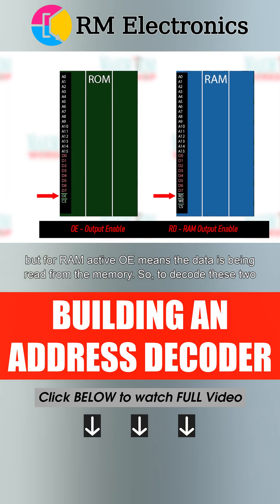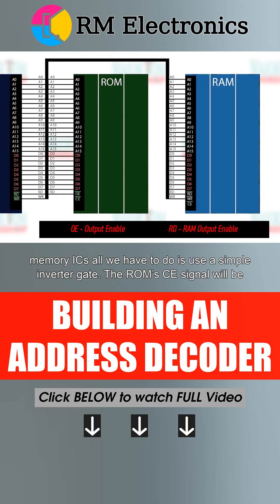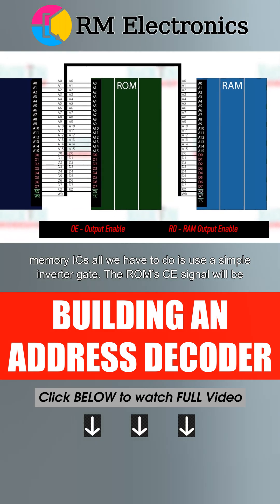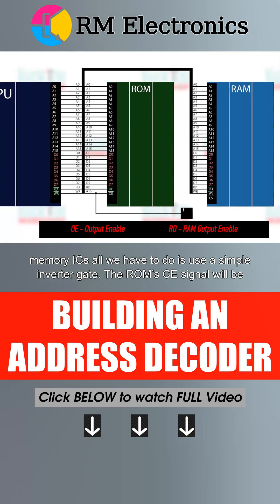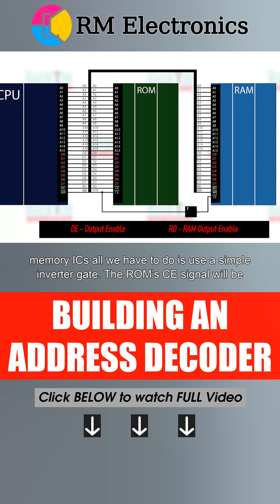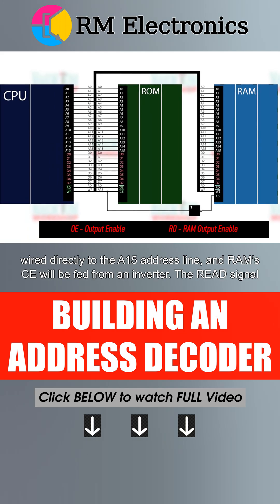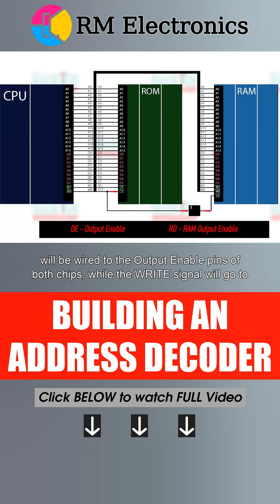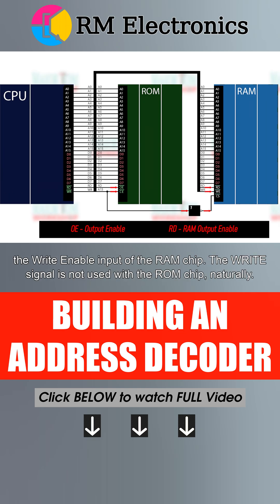To decode these two memory ICs, all we have to do is use a simple inverter gate. The ROM CE signal will be wired directly to the A15 address line, and RAM CE will be fed from the inverter. The read signal will be wired to the Output Enable pins of both chips, while the write signal will go to the write enable input of the RAM chip. The write signal is not used with the ROM chip, naturally.